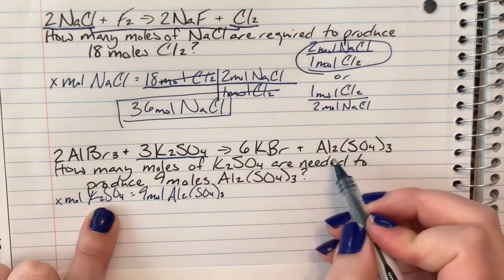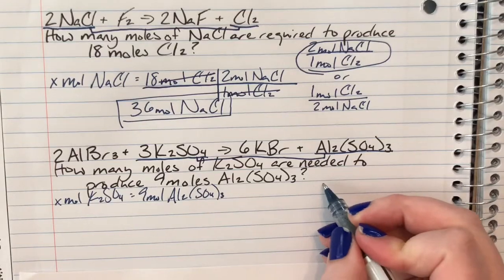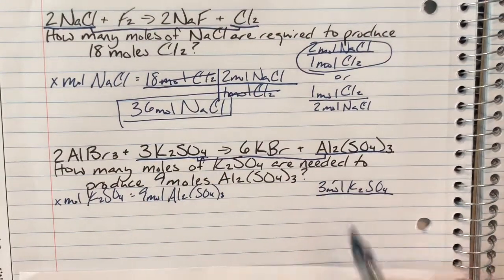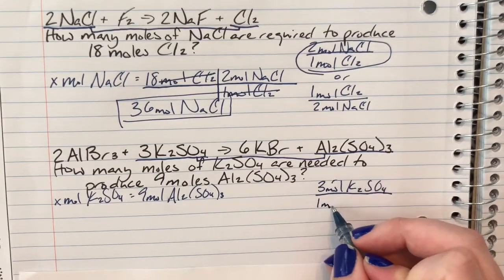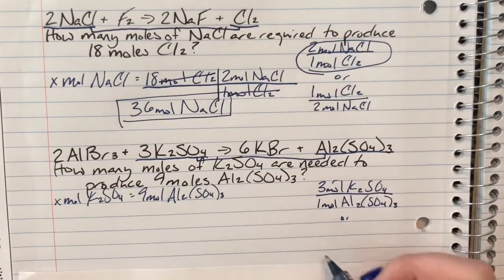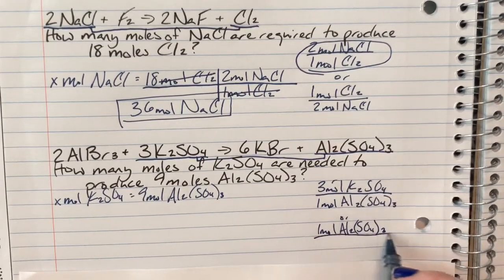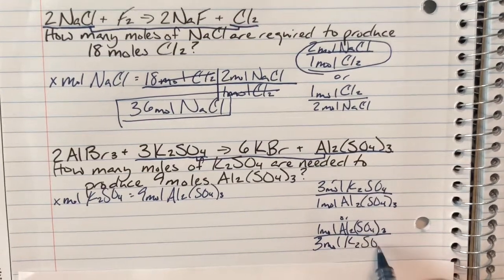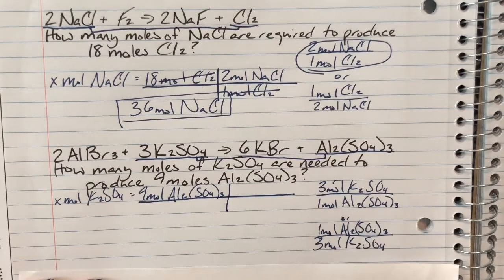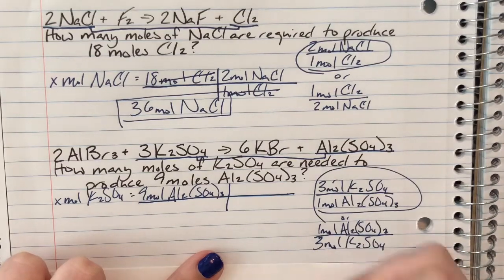I can clearly see the two compounds I care about: potassium sulfate and aluminum sulfate. I'll visually connect those and establish my ratios. I see that for every 3 moles of potassium sulfate — all I'm doing is taking the coefficient and sticking the word 'mole' in — there is 1 mole of aluminum sulfate (remember invisible coefficients are 1s). I'll flip that ratio as well, then figure out which one I actually need. I currently have moles of aluminum sulfate on the top, which means I need the ratio with moles of aluminum sulfate on the bottom.